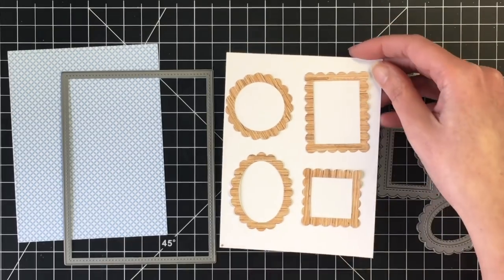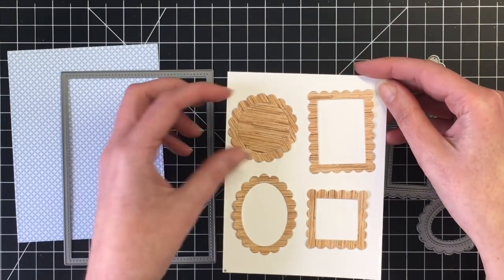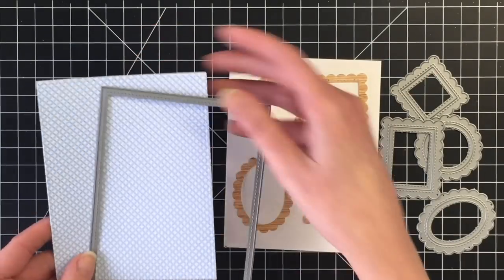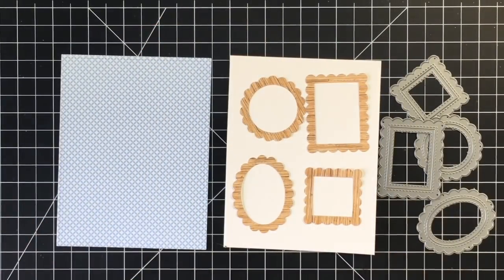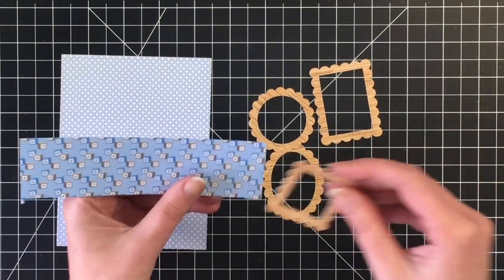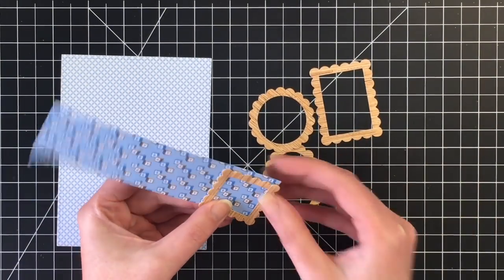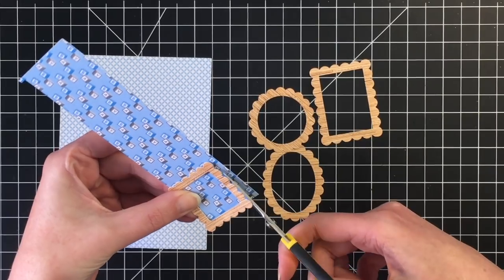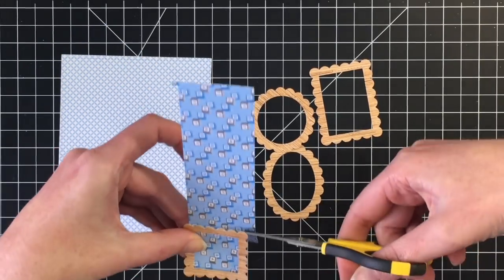I am going for a picture gallery wall idea here. So I cut out this back panel using a stitched rectangle die. And I used some pattern paper that looks like wood that I just grabbed out of my stash.